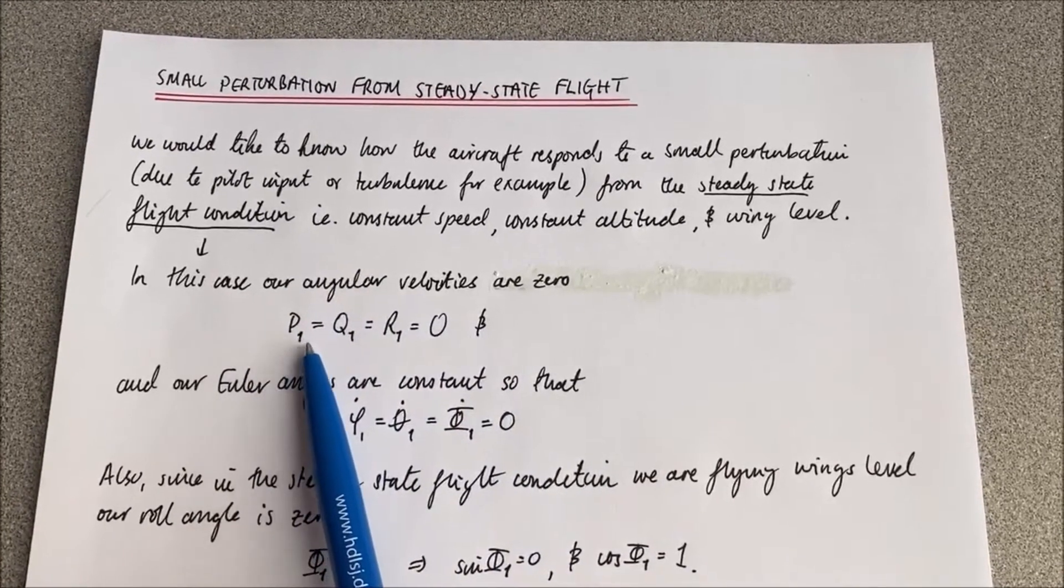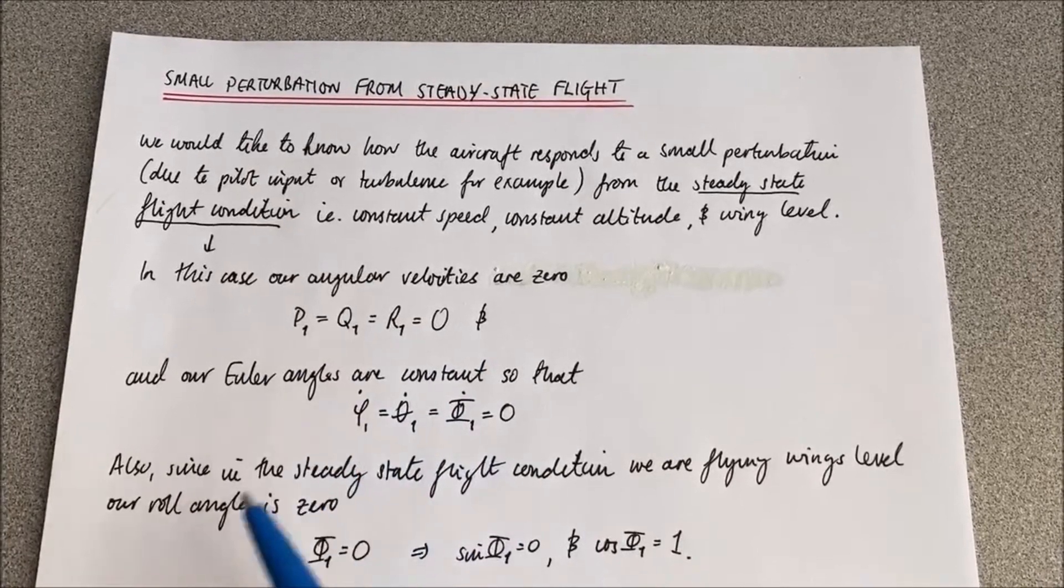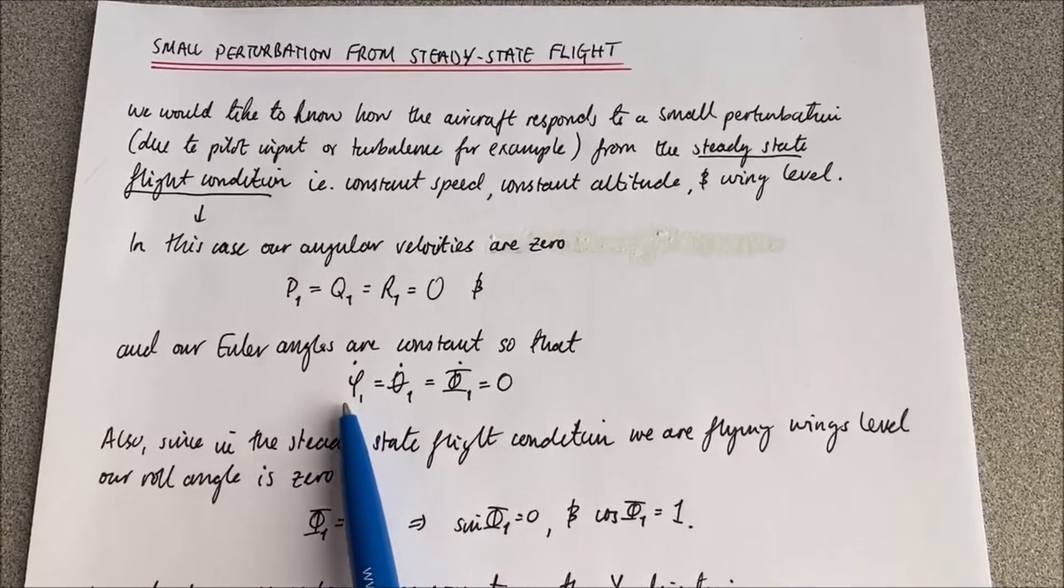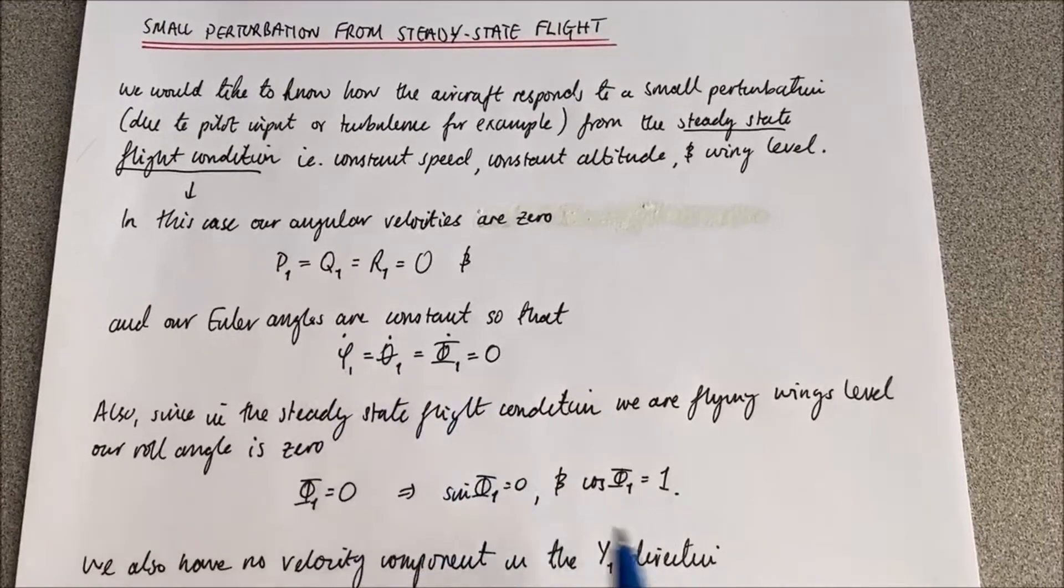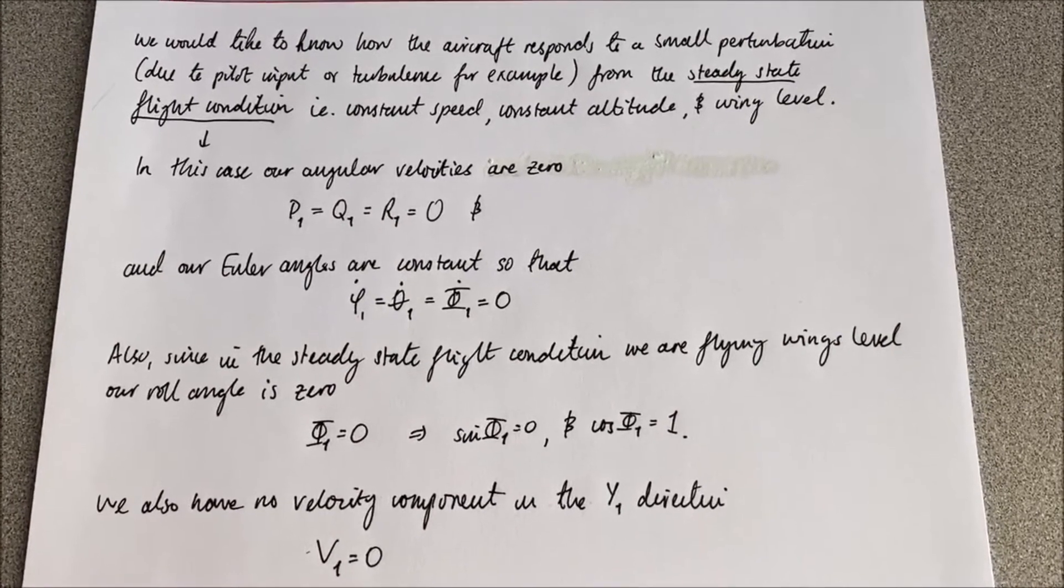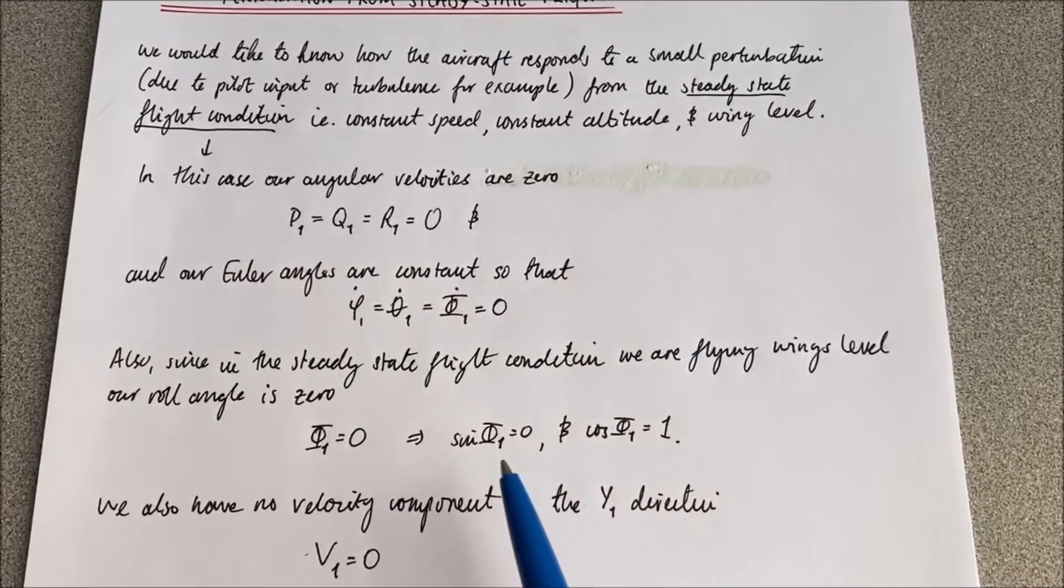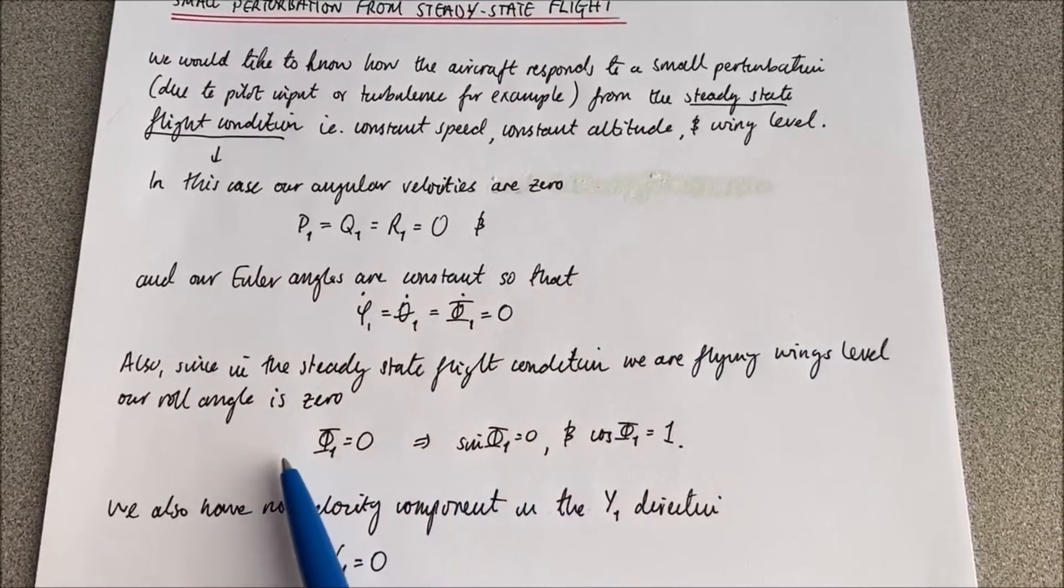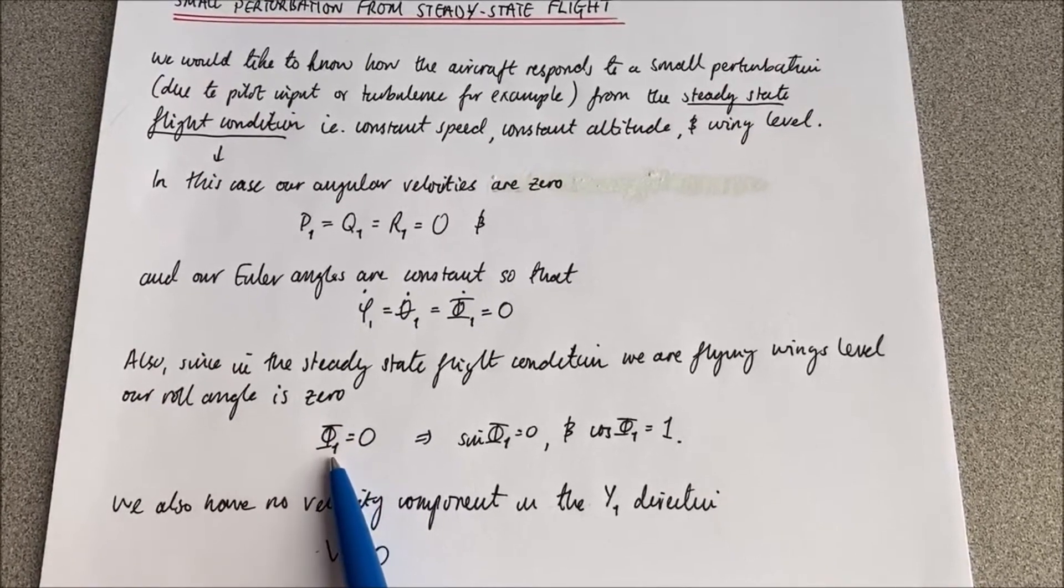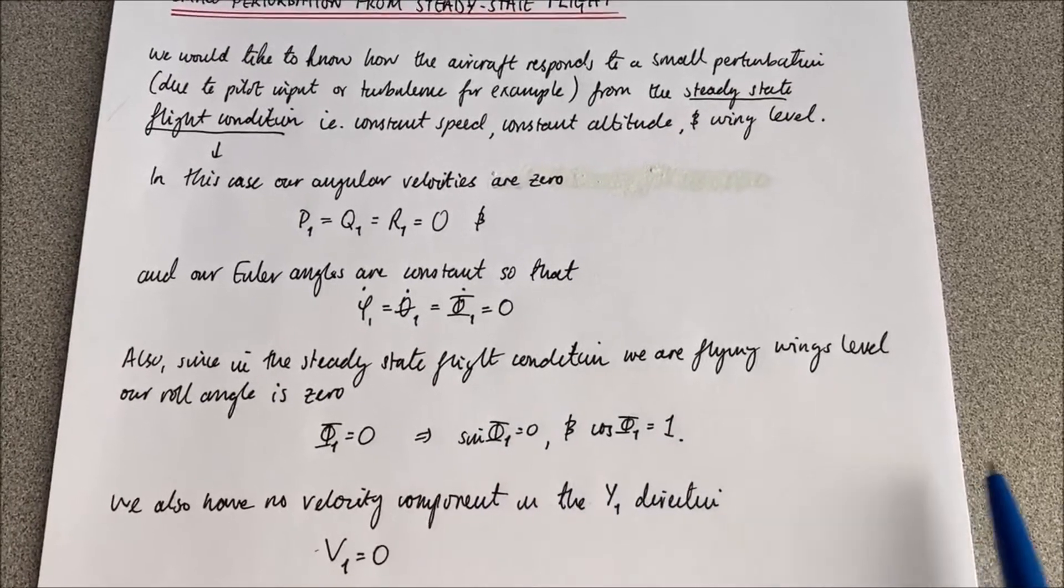This is the steady state flight condition which has the subscript ones. Angular velocity is zero and our Euler angles are constant, so that means that the change in Euler angles are all zero. Since the steady state flight condition is wings level, we can assume that phi_1 is zero and cos(phi_1) is one.